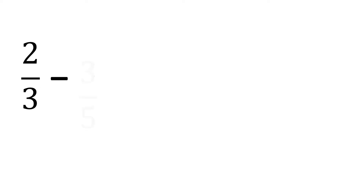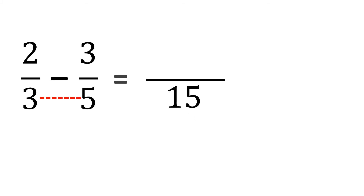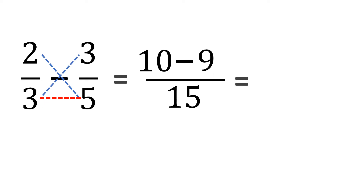Since you have learned the concept of subtracting fractions, let me show you the fastest way of subtracting fractions. Let us use the previous example, 2 thirds minus 3 fifths. To solve this in the fastest way, we multiply the two denominators: 3 times 5, that's 15. And then we cross multiply the values: 2 times 5, that's 10, minus 3 times 3, that's 9. So the answer is 10 minus 9 equals 1 fifteenth. And that's the final answer.